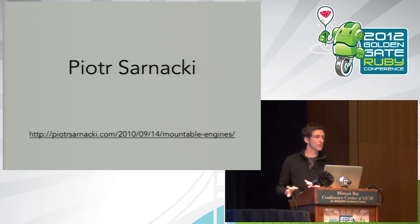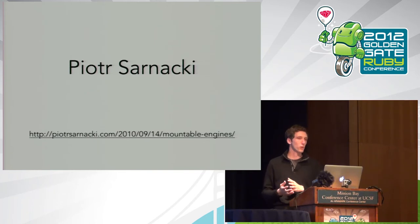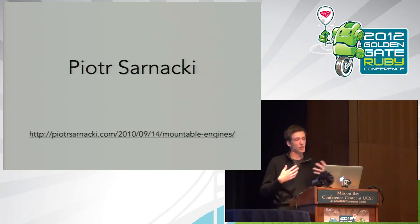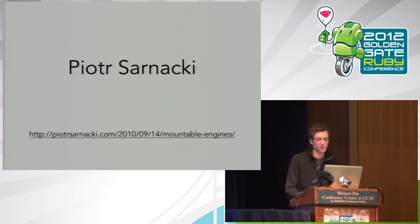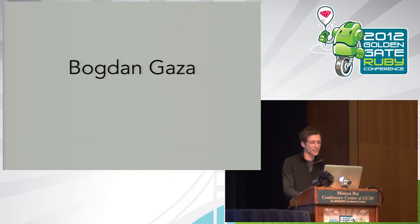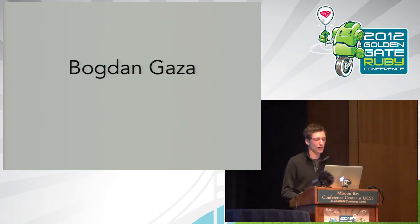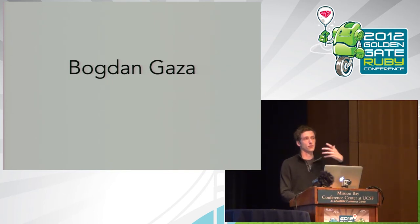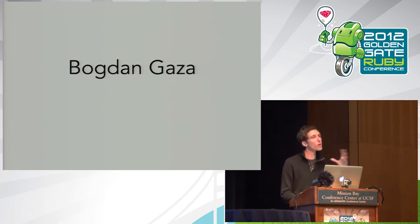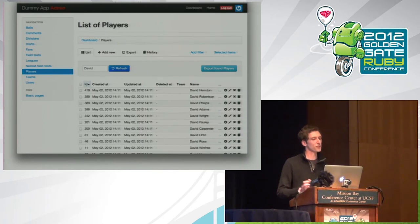Somewhat less lucky was Bogdan Gaza — I was his mentor. His project was to port Merb admin to Rails, basically taking the Merb backend that was generating that HTML using the Python Django stylesheets and bringing that code over to Rails to work with Rails 3. It also got a new look. DHH was very particular about not wanting it to look like Django, so we made a new skin. Today it uses Bootstrap — thanks to the kind people at Twitter.